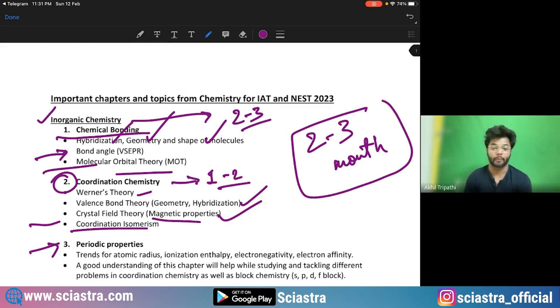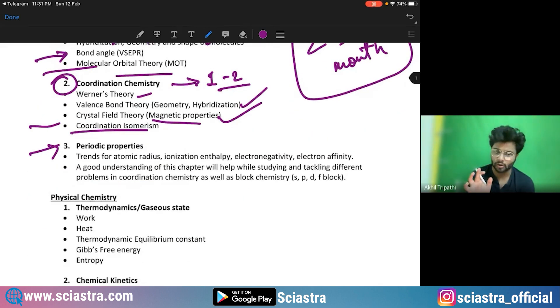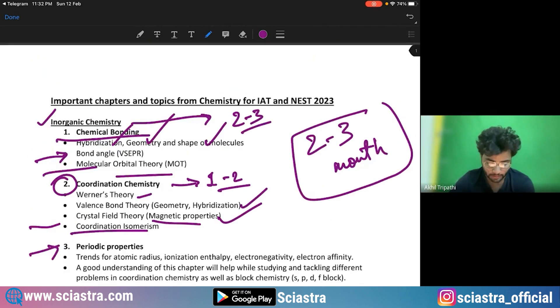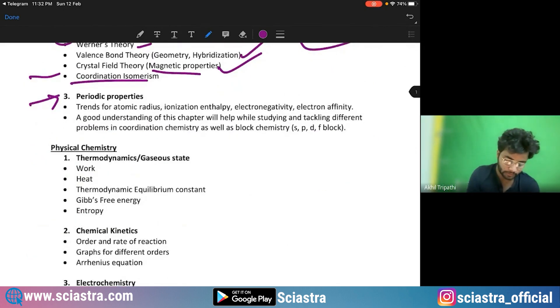Now coming to the periodic properties. As you have seen in my analysis, equal weightage is given to physical, organic and inorganic in both NEST and IAT. So here, the periodic properties, the important topics are trends in the atomic radii, ionization enthalpy, electron gain enthalpy, and electronegativity. Then understanding is important because these different problems will also be asked in the coordination chemistry as well as in the block chemistry of SPDF blocks.